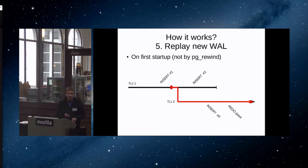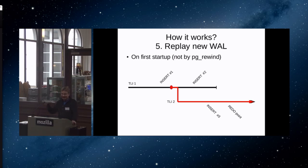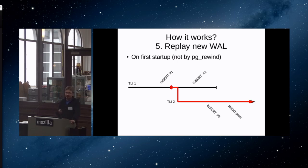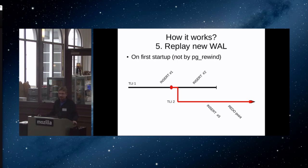Question: Will pg_rewind tell you what was lost? No, currently pg_rewind will not report what was lost. That would be a very nice feature. pg_rewind already scans the transaction log, so it already sees all those transactions — it does know what happened there, but it doesn't output it to the user currently. The transaction log is pretty low level, containing things like 'insert this record into this page' — you can't get the INSERT statement out of it, but you could definitely at least get the count of how many commits were lost. If you didn't lose any commits, from a user's point of view you lost nothing, even if there were some index updates or autovacuum activity.